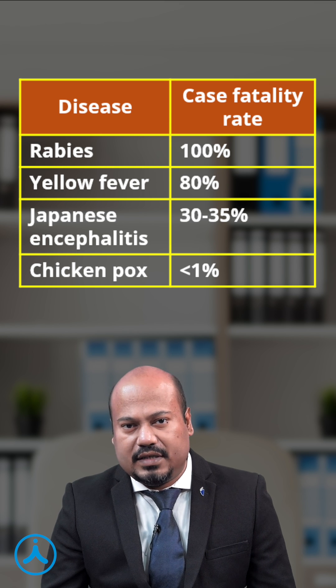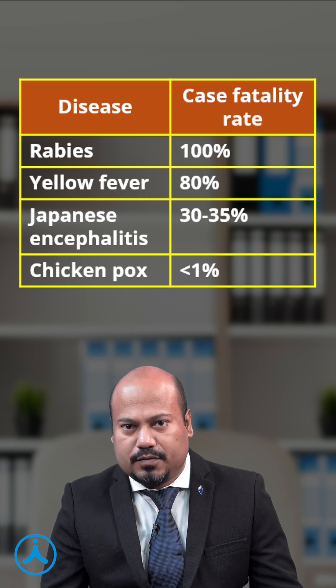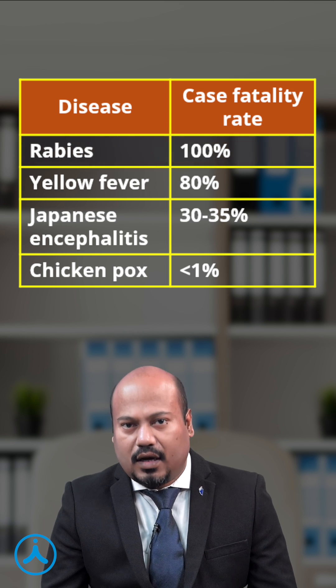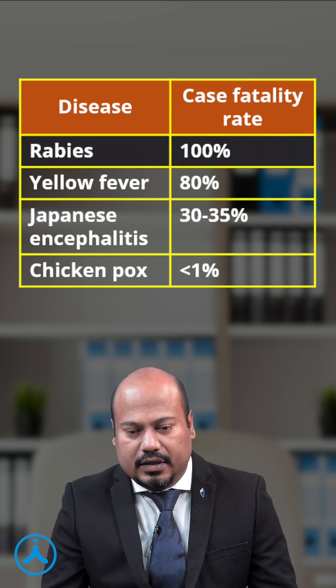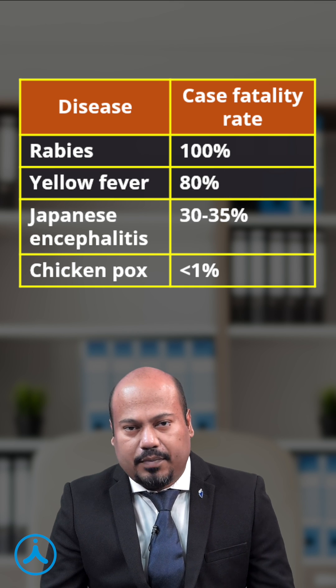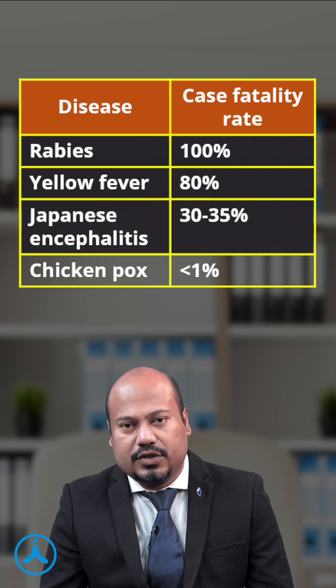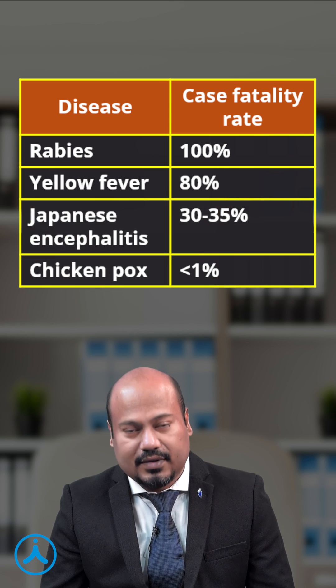Some important CFR values asked previously in exams: Rabies 100 percent, Yellow fever 80 percent, Japanese encephalitis 32–35 percent, Chickenpox less than 1 percent.